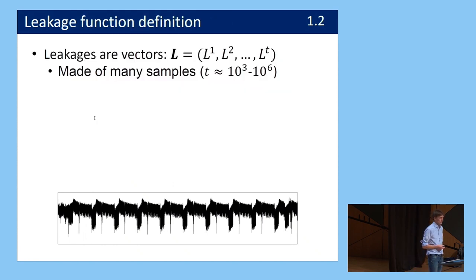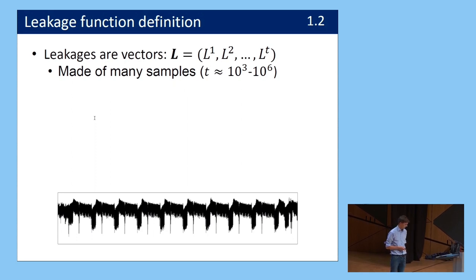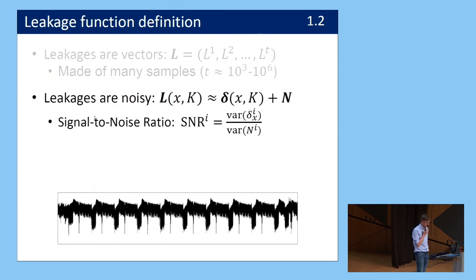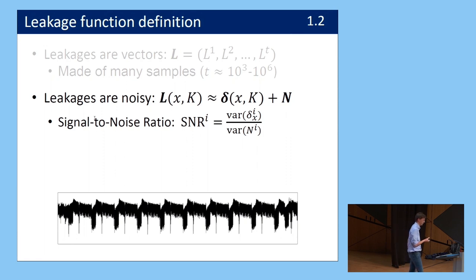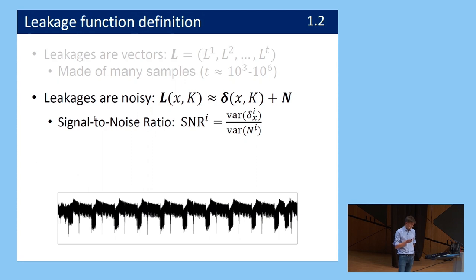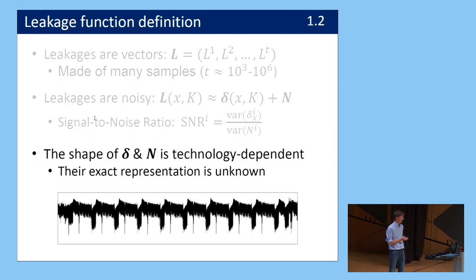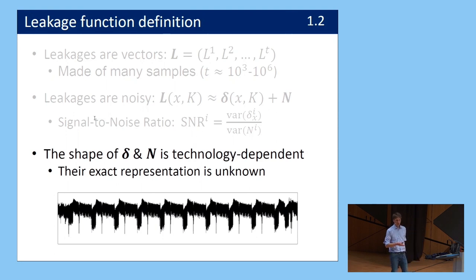Leakages are vectors made of many samples — between 1,000 and 1 million samples per leakage vector. They are noisy functions: the leakage depends on a deterministic part (which depends on plaintext X and key K) plus a noise vector N. We measure a signal-to-noise ratio as the ratio of the variance of the deterministic part to the variance of the noise. Most importantly, the shape of this leakage function is completely unknown — it's technology- and device-dependent. We can measure it but have no analytical formula, so we cannot say leakages belong to any complexity class.